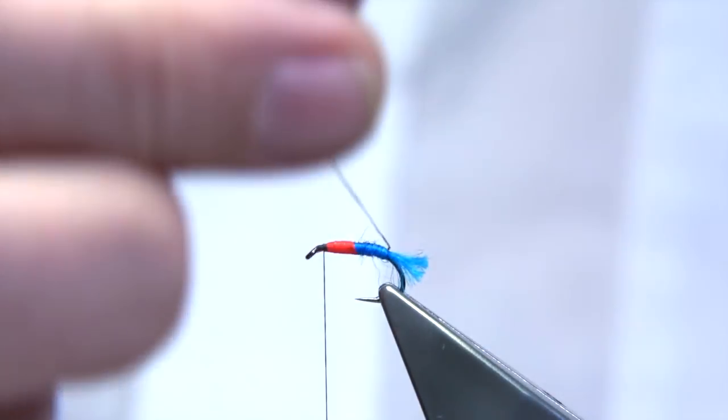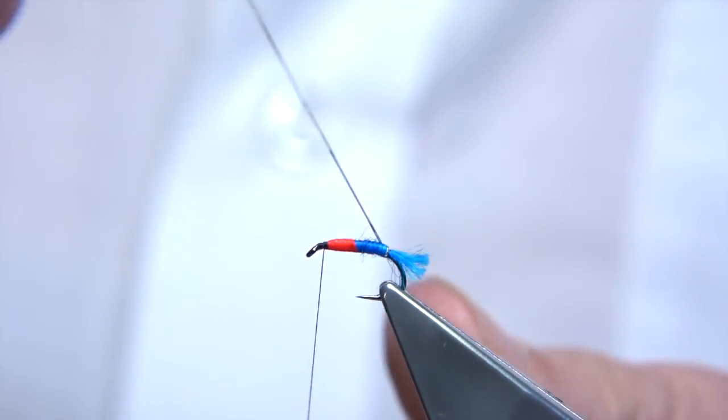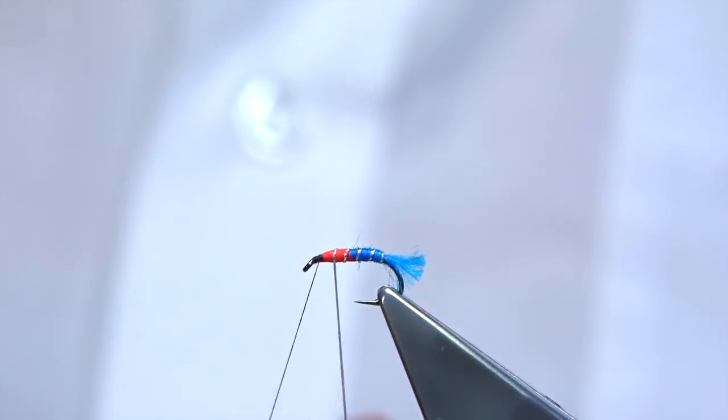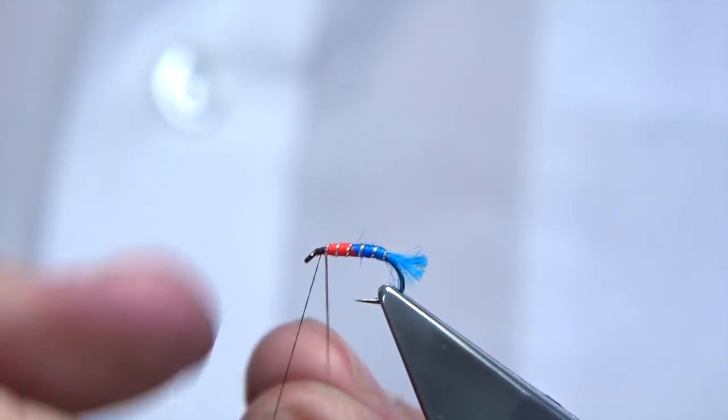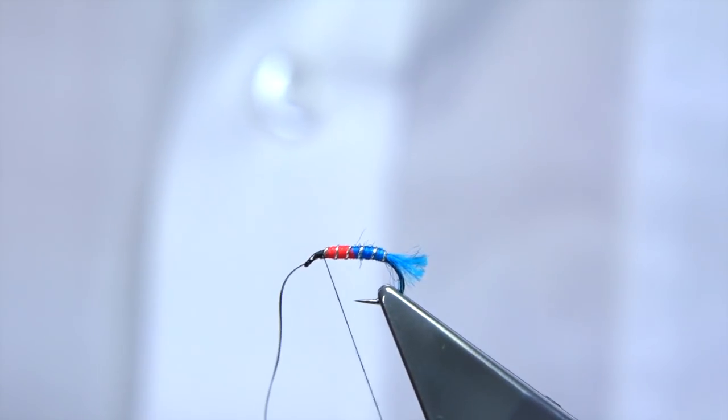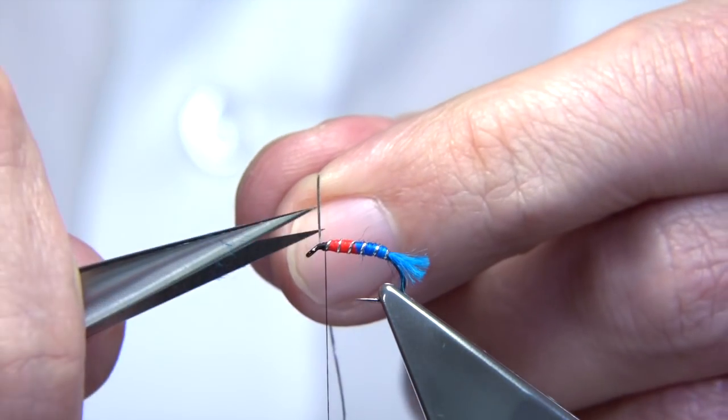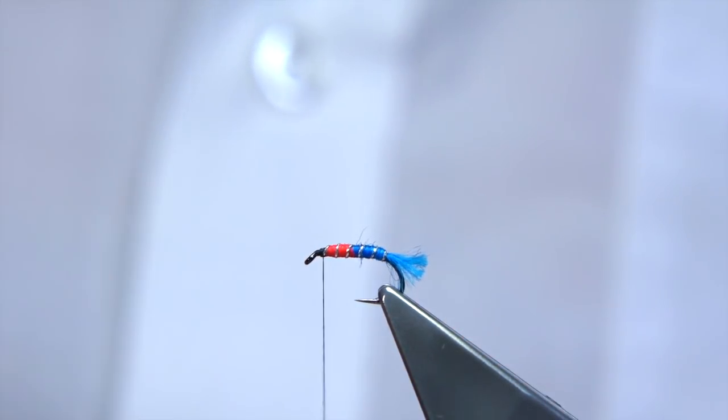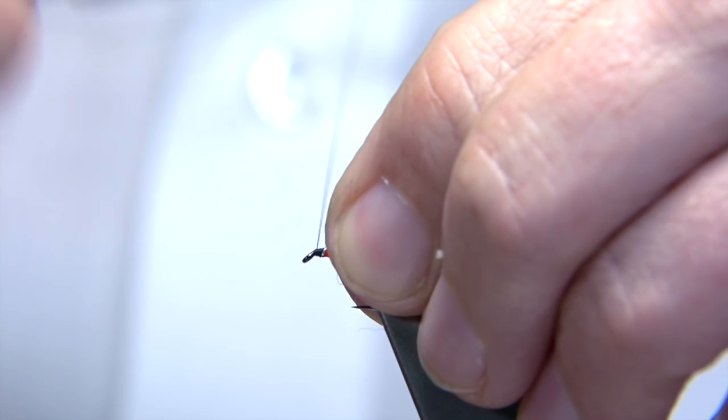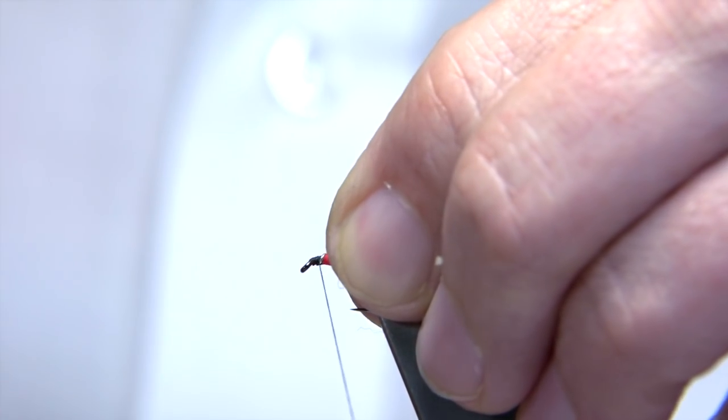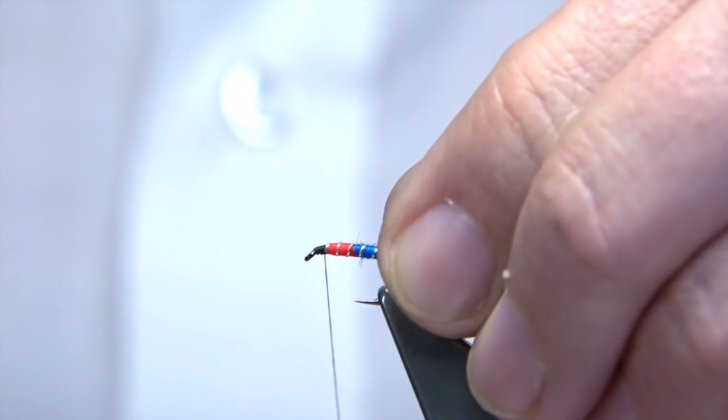Bring your rib up. Looking around about five turns or so. Catch it in, nice and tight. Two or three turns and then trim away the waste. Again, touch your wax because you need the wax just to make sure that it's well tied on. Bring it back to the point where you can tie in the hackle.